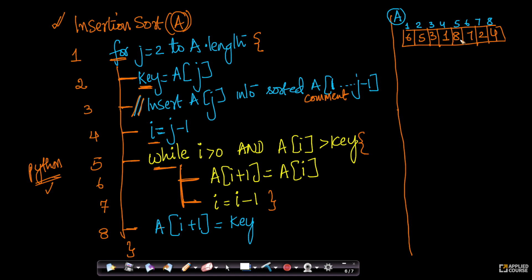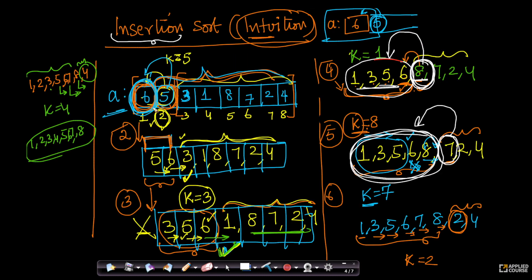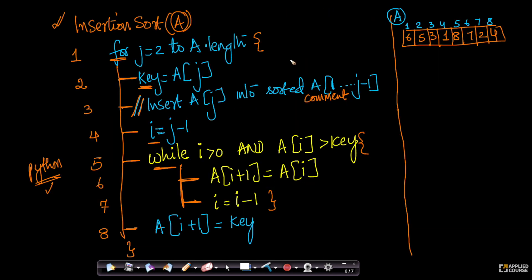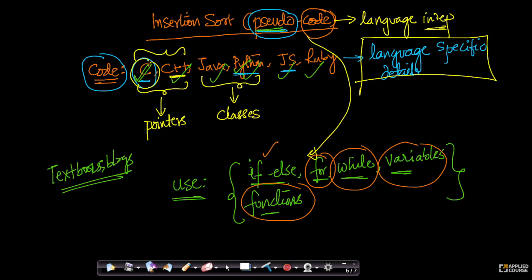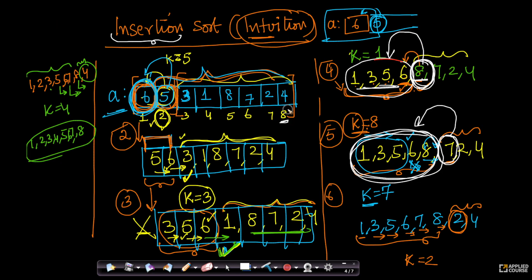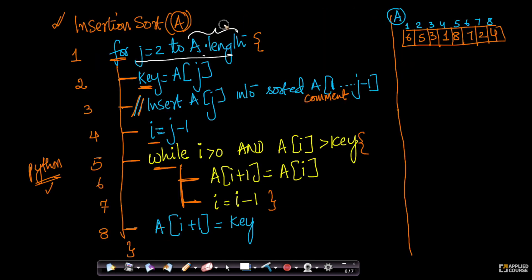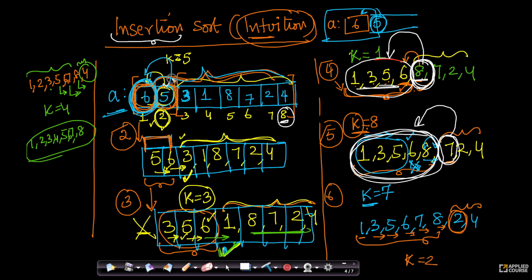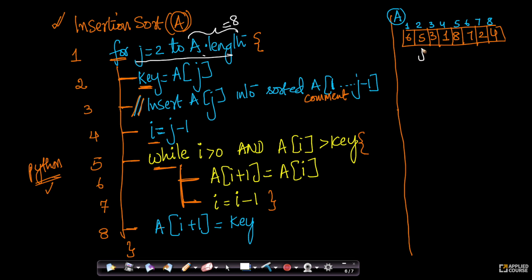Let's take the same example we used before to better understand the code. The variable j goes from 2 to A.length — where A.length means the length of the array, which is 8. In the very first iteration, we took the second element because the first element is trivially sorted, and we tried to insert it into the already sorted array. So j will first equal 2, then 3, incrementing by 1, up to j equals 8. That is the outer loop.